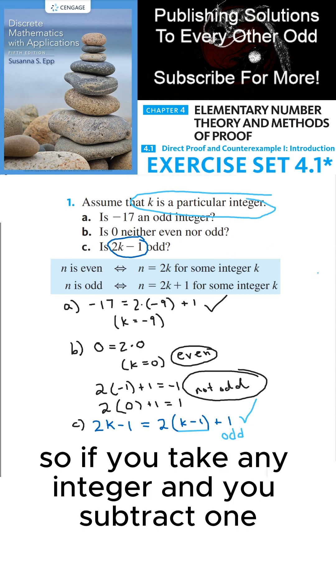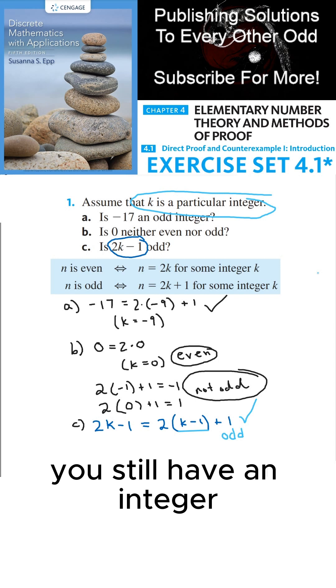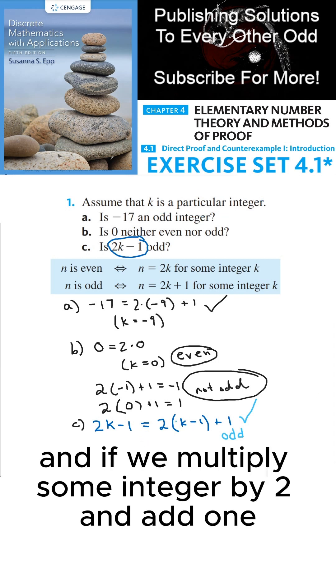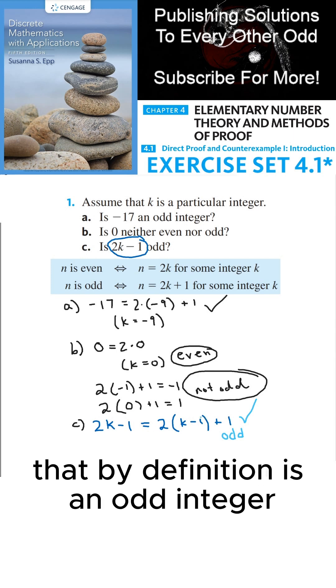So if you take any integer and you subtract 1, you still have an integer. So k minus 1 is an integer. And if we multiply some integer by 2 and add 1, that by definition is an odd integer.